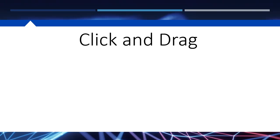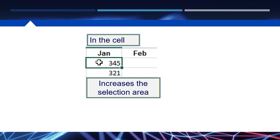When you click and drag in the cell, you simply increase the selection area. Notice your cursor is a big cross, and so when you're in the cell and you drag it somewhere else, it's going to increase the selection area.